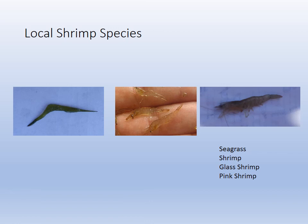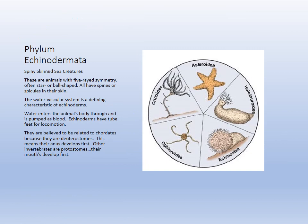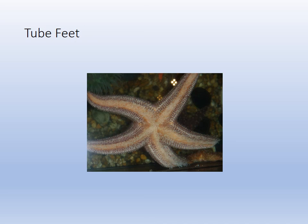Local shrimp species include grass shrimp, glass shrimp, and pink shrimp, all photographed from the arrowhead grass flats. Barnacles are also crustaceans — benthic, attaching themselves to hard surfaces, whether living, rock, dock, or elsewhere. Echinoderms are the spiny-skinned animals with water-pumped circulation and tube feet like little water balloons. They move with those little water balloons that inflate and deflate.